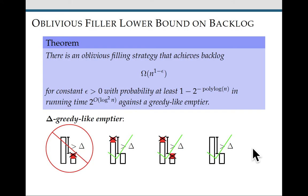And it gets it with great probability in the same running time as before. There is one way in which this is not quite as good as the adaptive case, which is that the result only applies to greedy like emptiers.